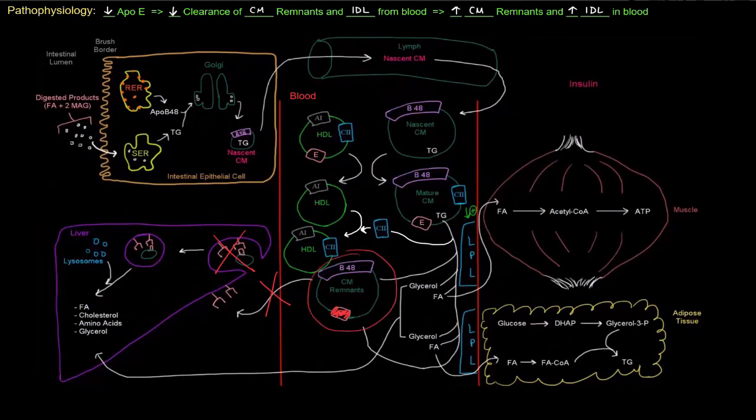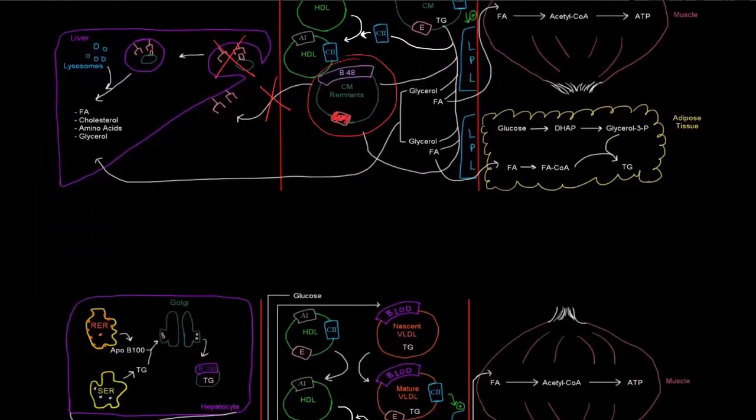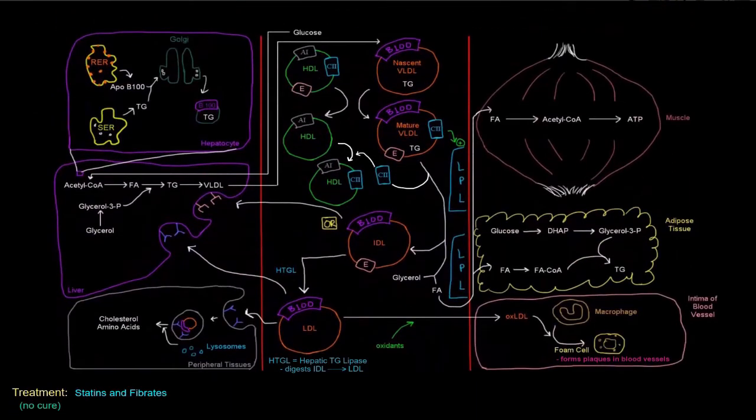Similarly, VLDLs - after VLDLs have their triglycerides cleaved into fatty acids and glycerols, we have the IDL as a product. That IDL uses its apoprotein E to bind the ApoE receptor there, and then it can be taken up.